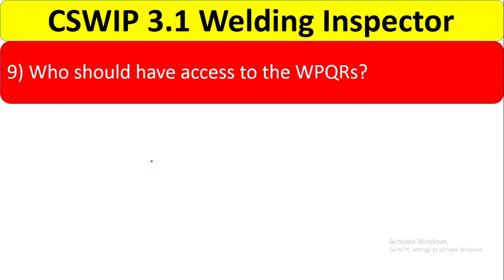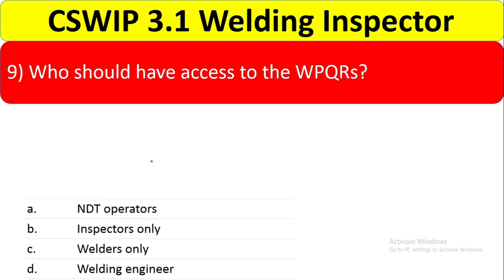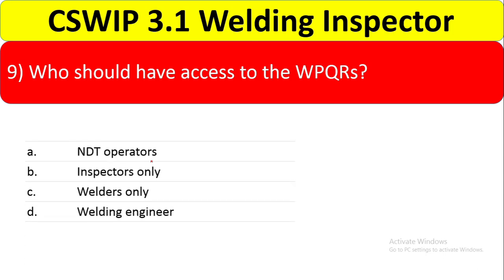Question 9: Who should have access to the welder performance qualification records? Options: NDT operators, inspectors only, welder only, or welding engineer. The welding engineer should have access to all welder procedure qualification records. The correct answer is the welding engineer.